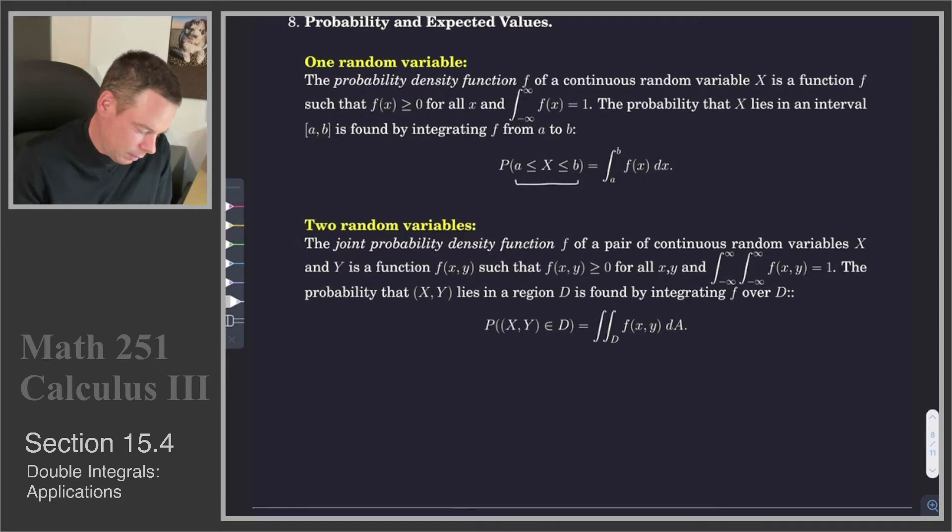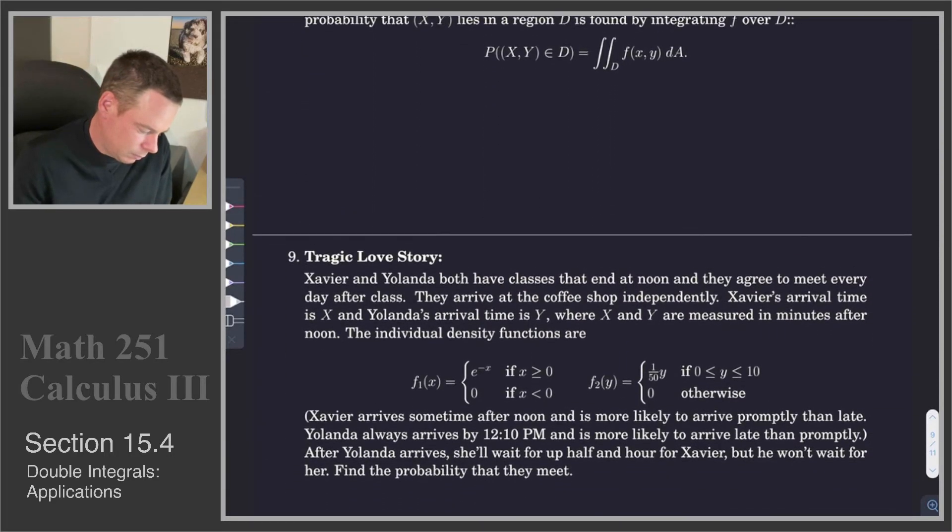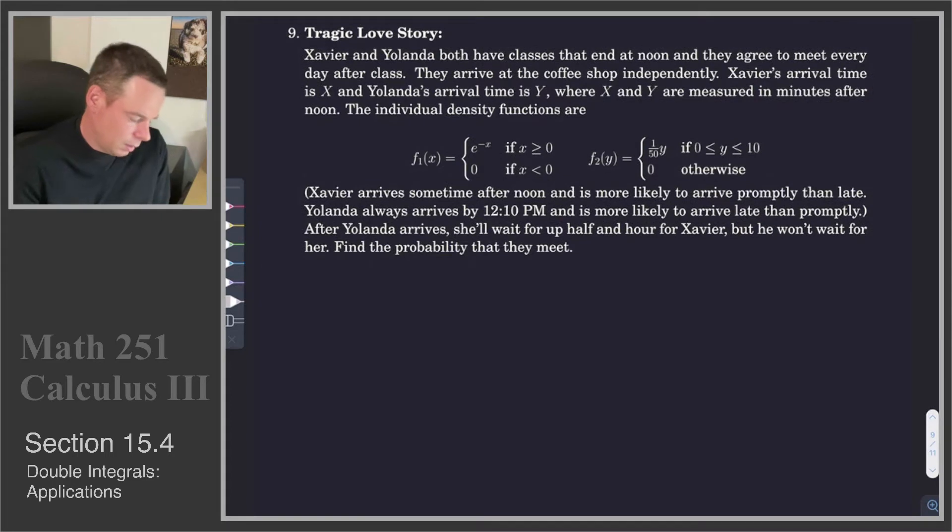So let's go ahead and do an example. We've got two people, Xavier and Yolanda, and they both have classes that end at noon, and they agree to meet every day after class. They arrive at a coffee shop independently. Xavier's arrival time is given by capital X, Yolanda's arrival time is given by capital Y. So those are our random variables. We're going to measure them in minutes after 12 o'clock or minutes after noon.